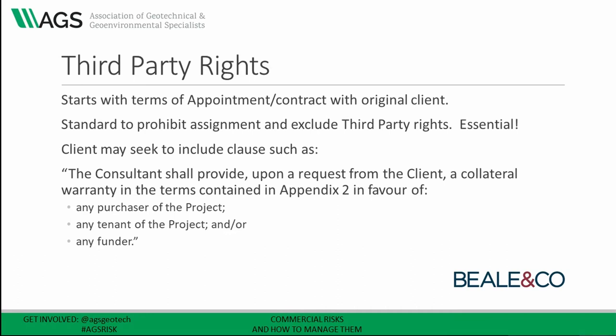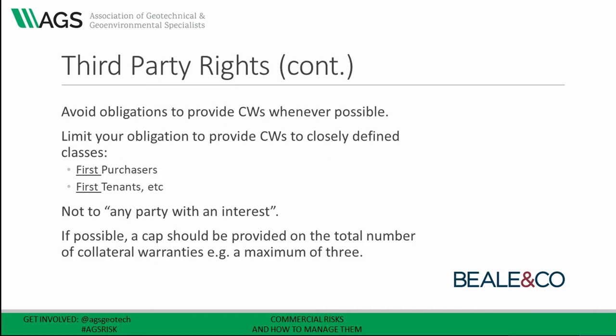Your client will usually insert a requirement in your appointment to provide collateral warranties to certain parties — for example, a clause stating 'The consultant shall provide, upon request, a collateral warranty in favour of a new purchaser, a new tenant or a new funder.' We've seen them drafted wider too, such as to any party with an interest in the project. We would always advise you to avoid providing collateral warranties wherever possible, but if that's not possible, limit your obligation to a closely defined group — so instead of any purchaser it would be the first purchaser, and cap the total number of collateral warranties you are obliged to grant to a maximum of three.